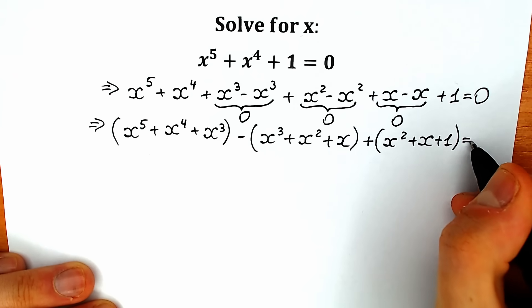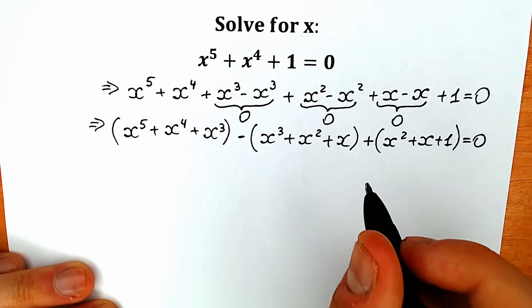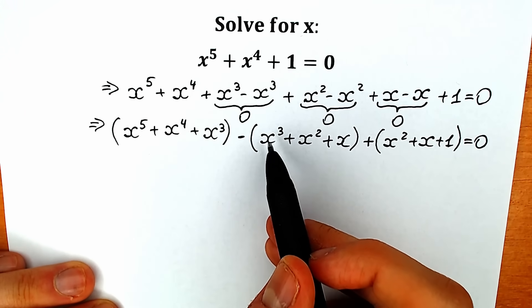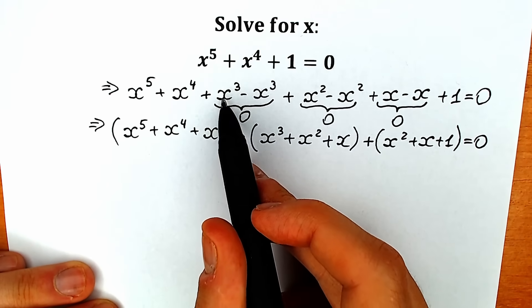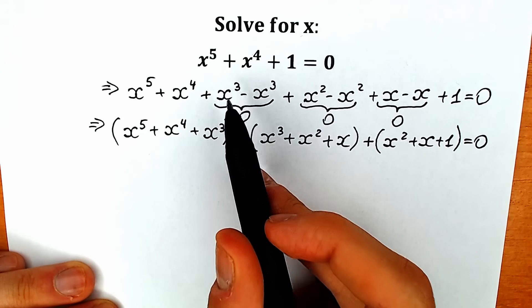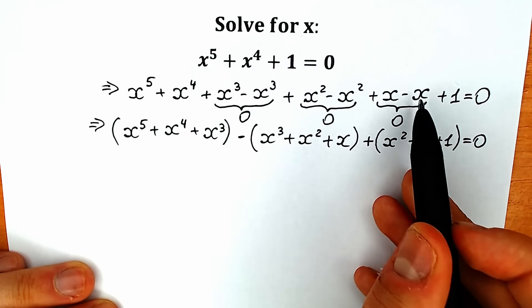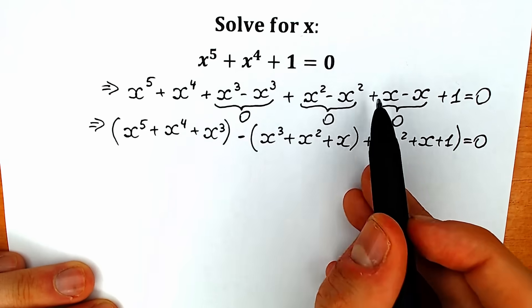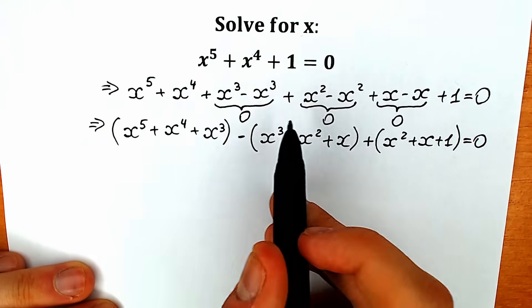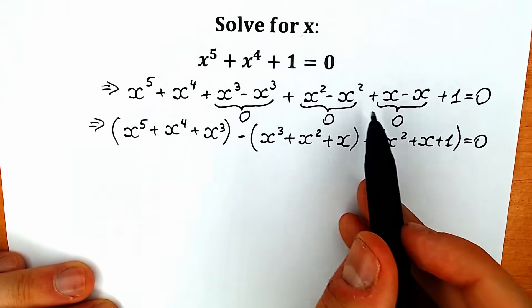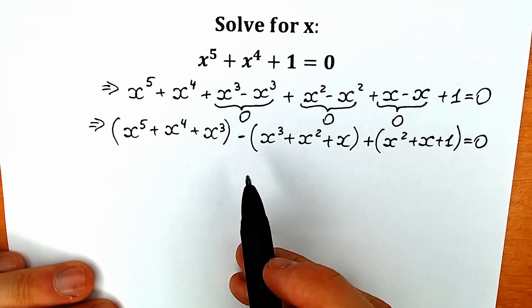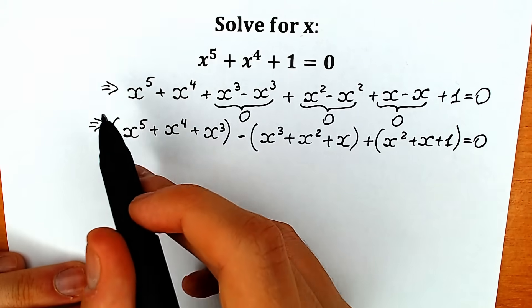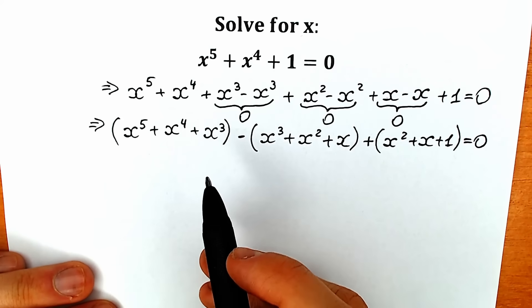I hope you understand this step — you can pause the video. In the first parenthesis I take x cube. In the second parenthesis I take minus x square and x. In the last parenthesis we have x square, x, and one. You can easily open the parentheses and you will see the same expression as in the beginning.